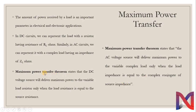This is the definition of maximum power transfer theorem in the DC domain, while the other applies to AC circuits. We will deal with DC circuits only. So we have to memorize: the maximum power transfer theorem states that the DC voltage source will deliver maximum power to the variable load only when the load resistance is equal to the source resistance.